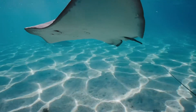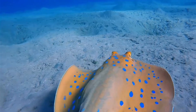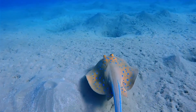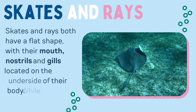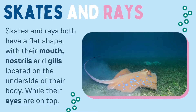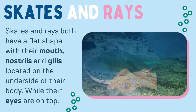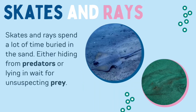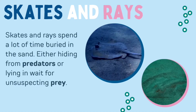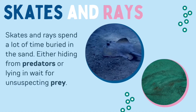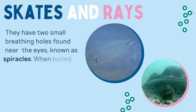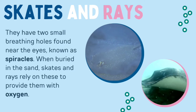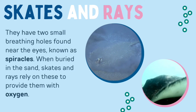Let's find out more about two types of fish that look quite similar but actually have quite a lot of differences — let's look at skates and rays. Skates and rays both have a flat shape with their mouth, nostrils and gills located on the underside of their body, while their eyes are on top. They spend a lot of time buried in the sand, either hiding from predators or lying in wait for unsuspecting prey. They have two small breathing holes found near the eyes known as spiracles.